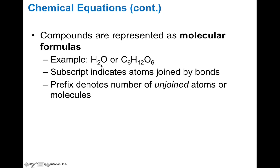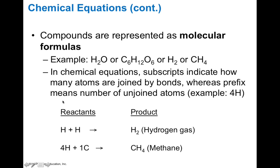The subscript indicates the number of atoms that are joined by bonds, whereas a prefix — which we don't see here — would denote the number of unjoined atoms or molecules. An example of this prefix denotation would be in the reaction of four hydrogen atoms and one carbon atom, which can yield methane, CH4. So four separate, unbound hydrogen atoms and one separate carbon atom can combine together to form one molecule of CH4, which we call methane.